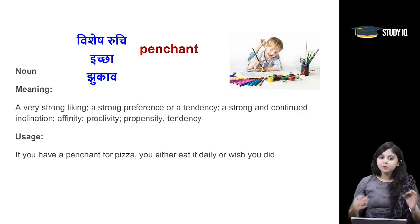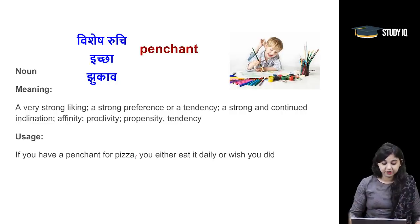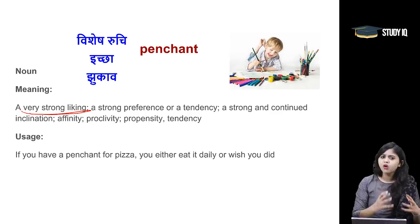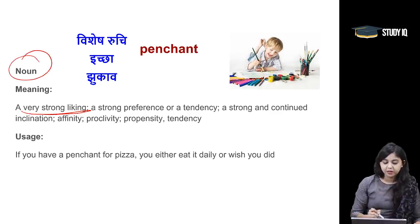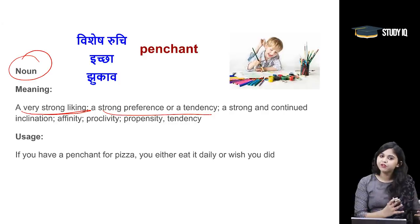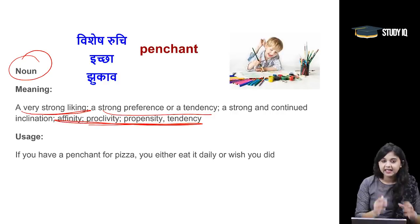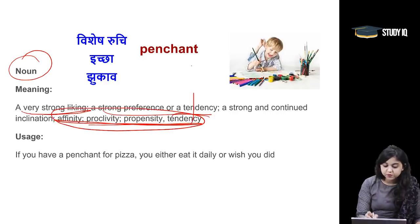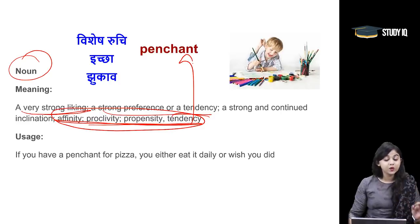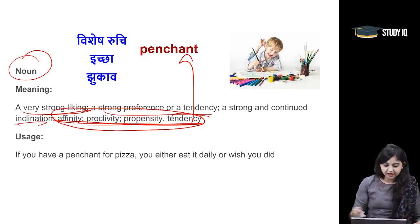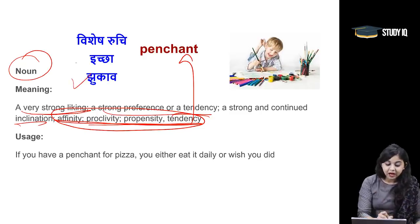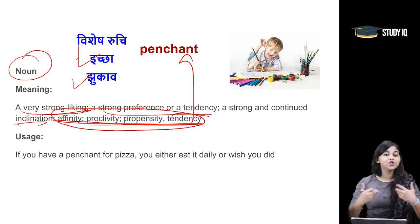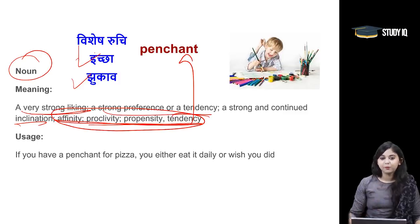Moving on to the next word: Penchant. Penchant means when you have an inclination or a strong liking towards something. Whenever you have a very strong preference or tendency — a proclivity, propensity, affinity, or tendency — these are very important synonyms of penchant. When you have a strong and continued inclination towards something, when you have a very special interest and high enthusiasm for doing something, we use the noun penchant.